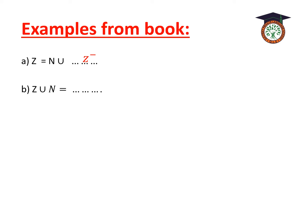Example b: Z union N. Union means collecting all elements without repeating, so we choose the biggest set. Which is bigger — Z (integers) or N (natural numbers)? The answer is Z. Example c: Z union Z⁻. The same rule applies — the answer is Z.